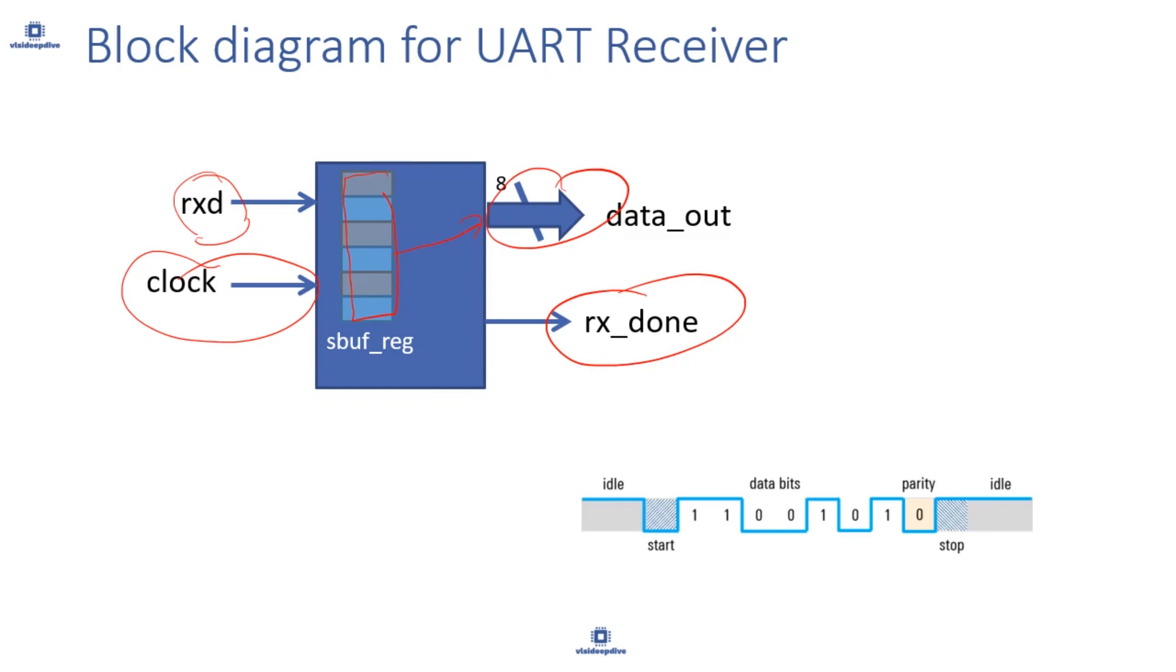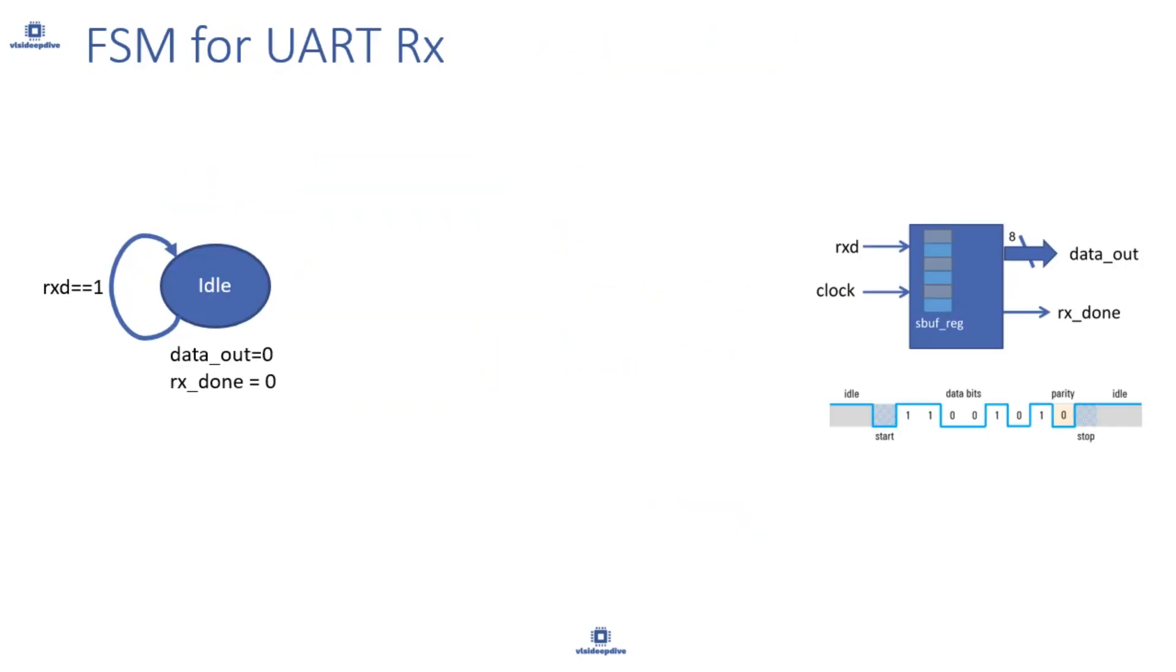Let us understand and design this in more detail. First, let us create an FSM for this UART receiver. It will keep checking on the data line. This is the data line - till on this data line it's in idle state, that means signal value is 1, nothing to be done. So basically it keeps checking this data line, keeps polling on this. When RXD is 1, it stays in idle state, nothing is happening on that line, nothing is being sent. There is nothing on the data_out and rx_done is not done, so basically nothing has been received.